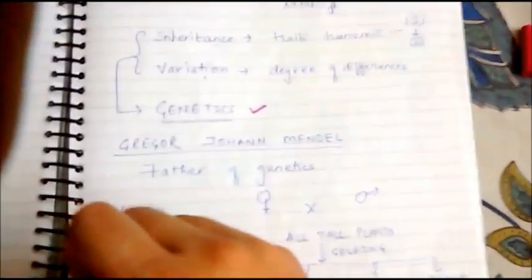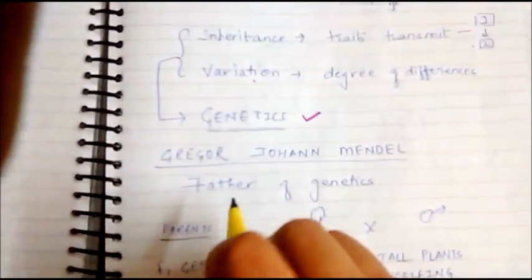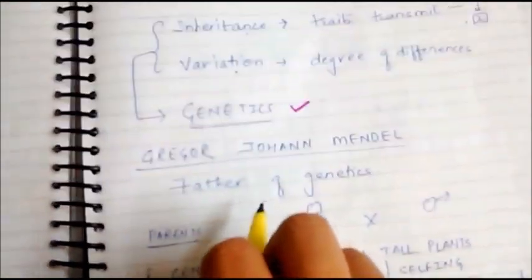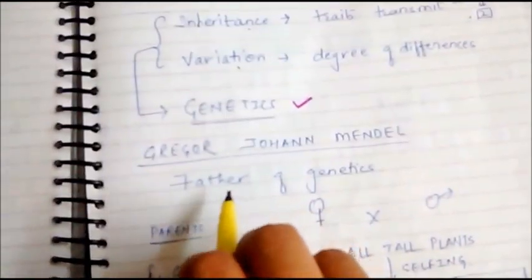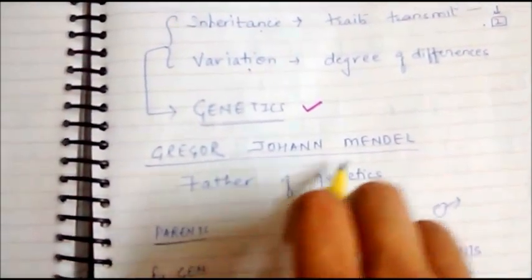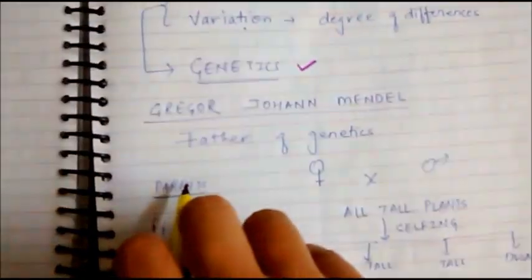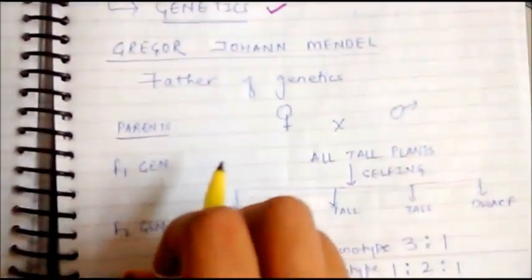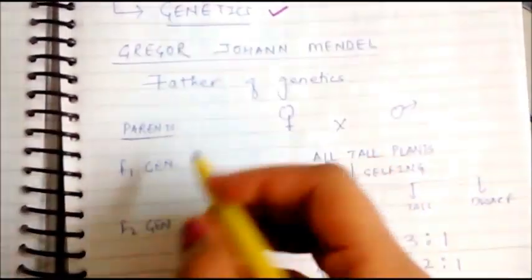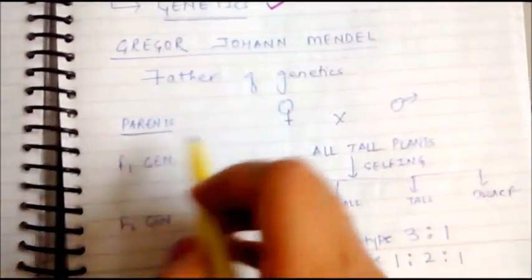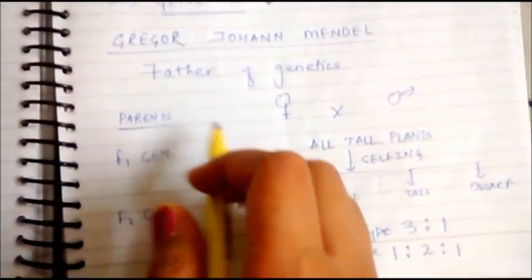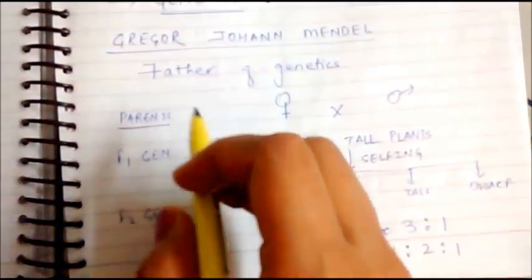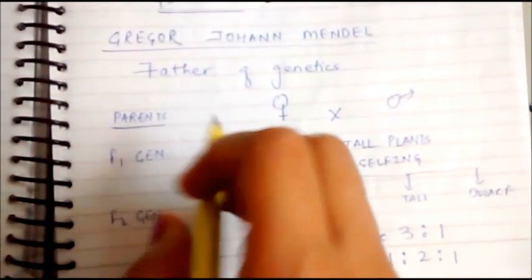The father of genetics is Gregor Johan Mendel. He told us about the transmission of character from one generation to the next generation by doing experiments on Garden Pea, Pisum sativum.